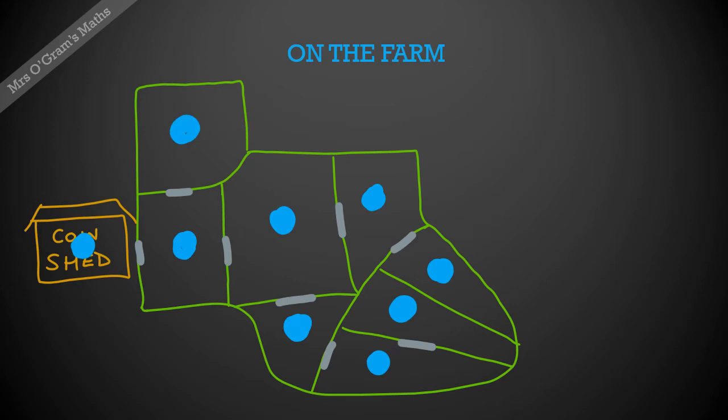So then we put in edges. Anywhere that we've got a gate, we can add an edge. So we have a gate through here and one here. I'm going to carry on just adding edges everywhere that there is a gate between those paddocks.